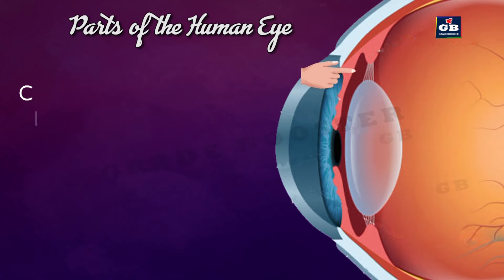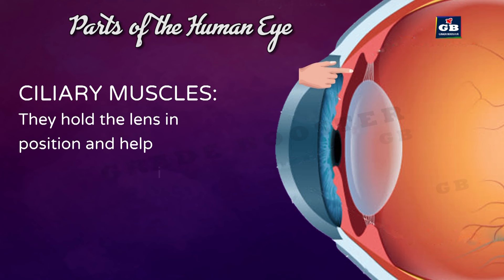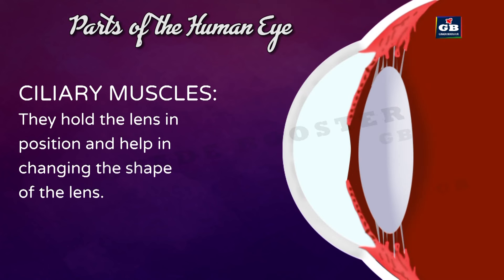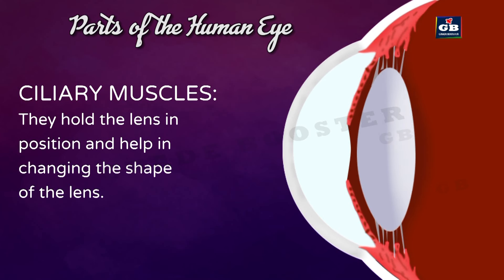Ciliary muscles hold the lens in position and help in changing the shape of the lens. The shape or curvature of the lens is modified by the action of these ciliary muscles.